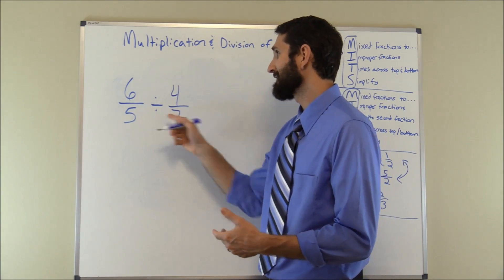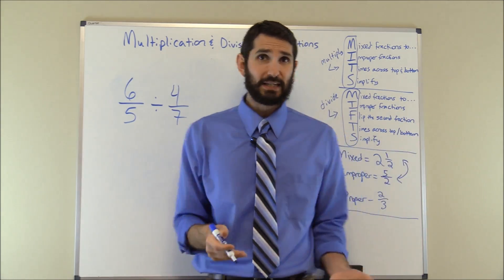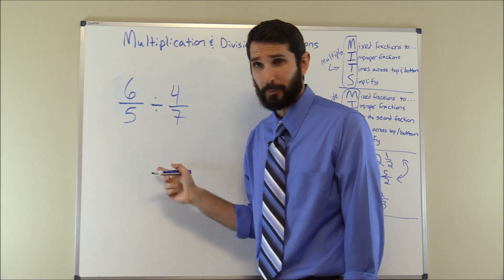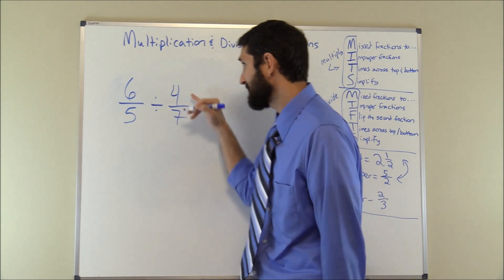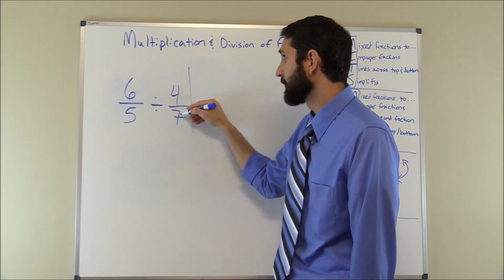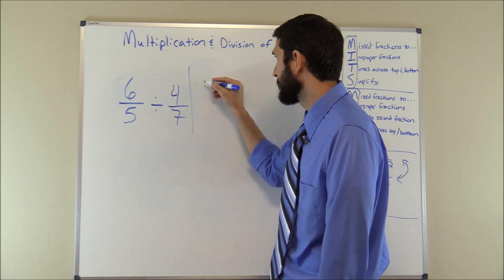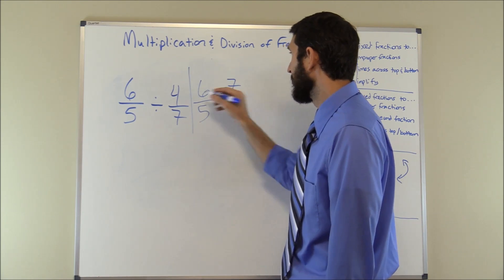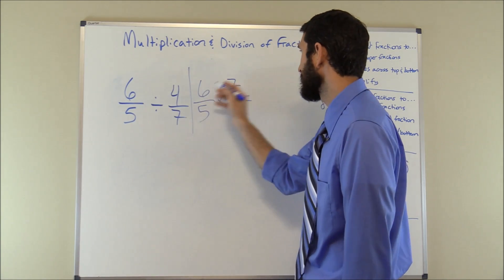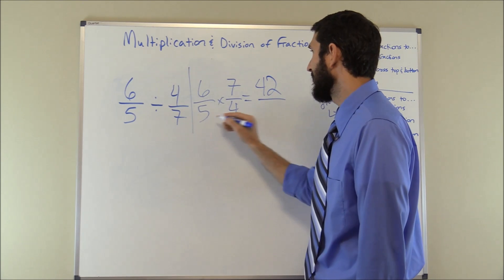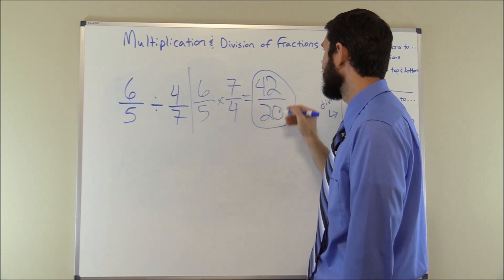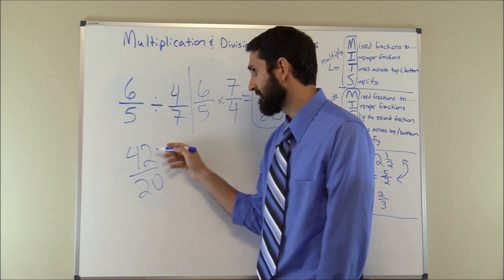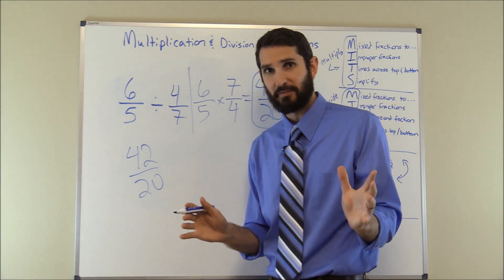For our next problem: six over five divided by four over seven. Again it's a division problem. The M and I of our mnemonic — we don't have any mixed fractions, so we're good. Next, we flip the second fraction and multiply instead of divide. So six over five times seven over four. Six times seven is forty-two, and five times four is twenty, giving us forty-two over twenty.